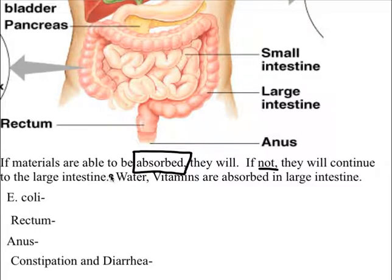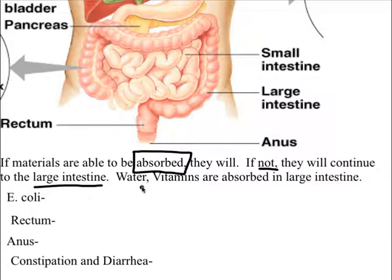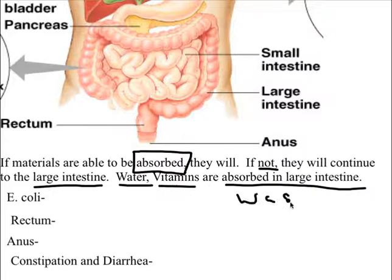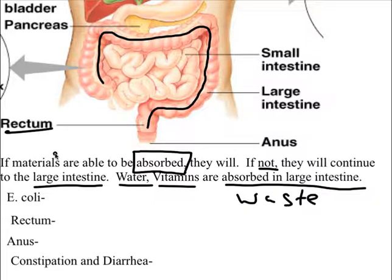The overwhelming majority of materials we take in will be absorbed — only a small number will not be. We don't eat just to get rid of what we put in; we eat to absorb nutrients and make energy. What can't be absorbed continues into the large intestine. Water and vitamins are not absorbed in the small intestine — they're absorbed in the large intestine, along with waste continuing through to the rectum.